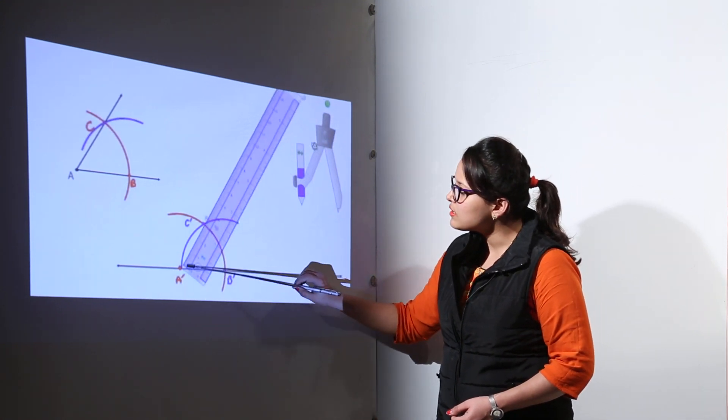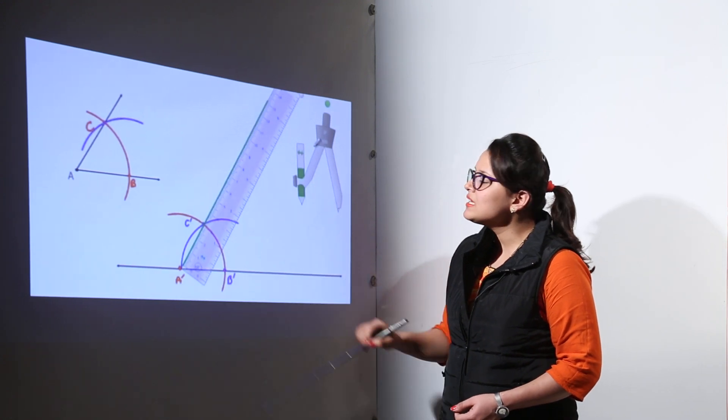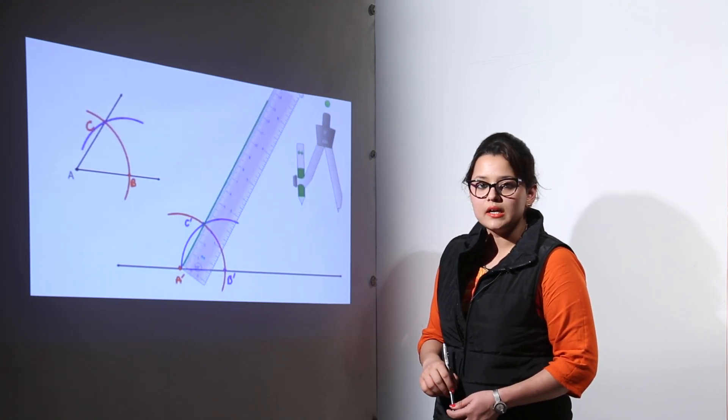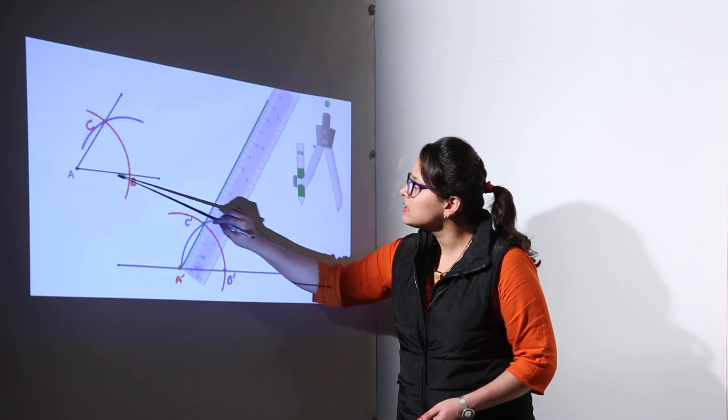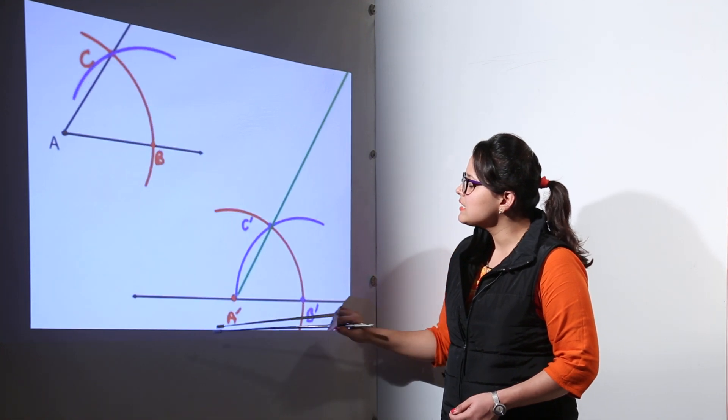All we are required to do is join A dash with C dash and that will give us the required copied angle of the given angle. You can see over here, the given angle is this one and the copied angle is exactly same.